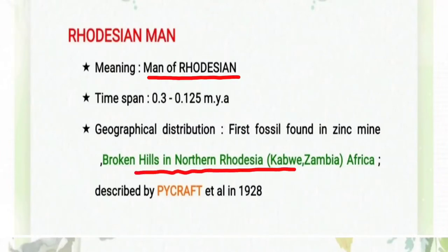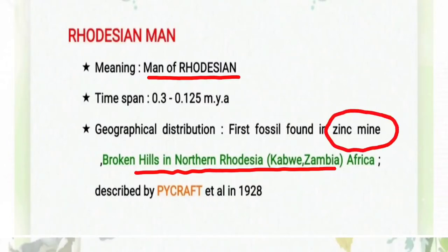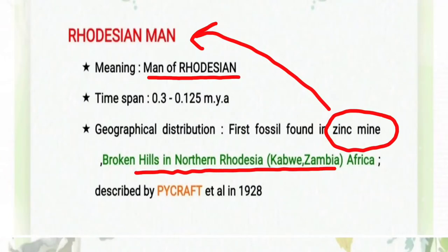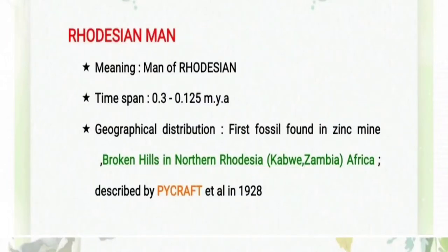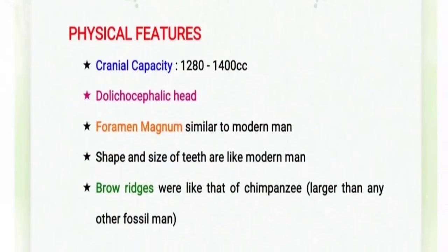The fossil was found in the northern Rhodesia of the Kafue-Zambia area, a place in the country of Zambia, where in a zinc mine the fossils of the Rhodesian Man were discovered. The time span — that is, how old the fossils are — is said to be 0.3 to 0.125 million years old. This was described by Pycroft et al. in 1928.